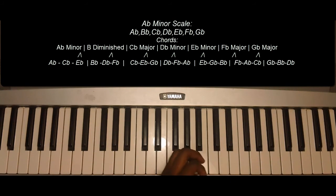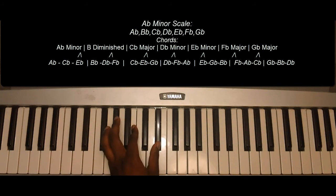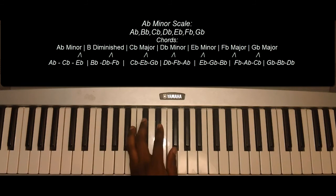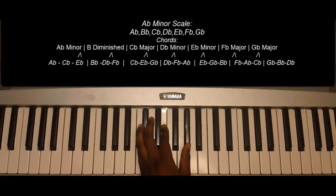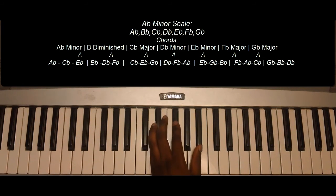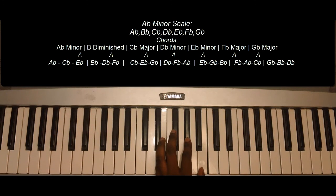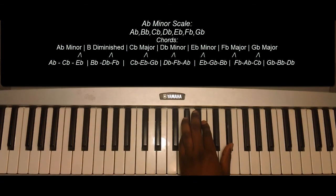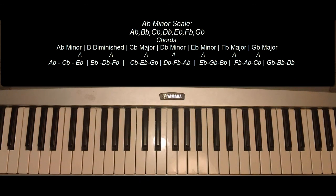So from the top, the chords of the A-flat minor scale: A-flat minor, B-flat diminished, C-flat, D-flat, E-flat, F-flat, G-flat, A-flat minor. That covers the A-flat minor scale. Thank you.